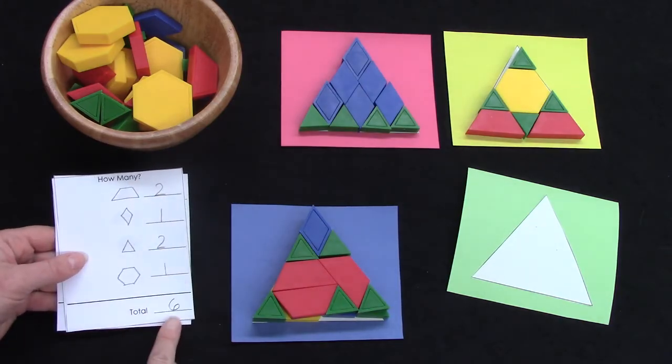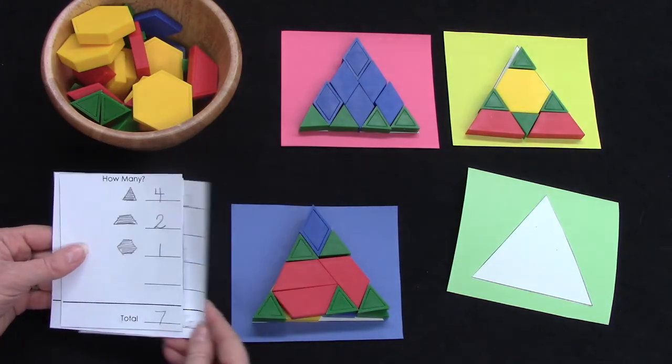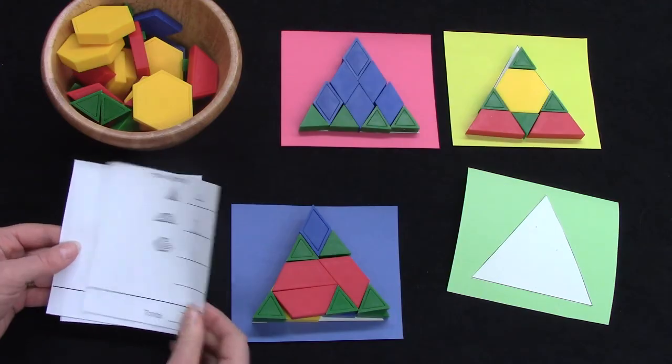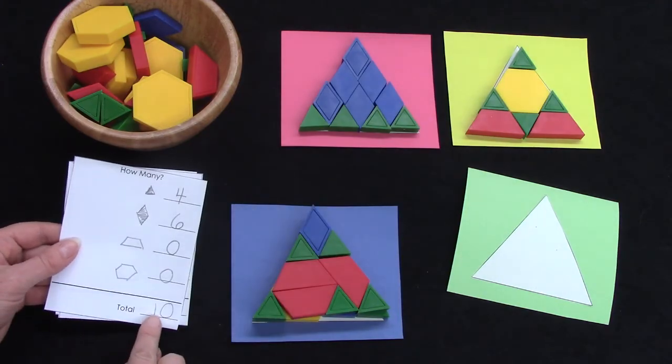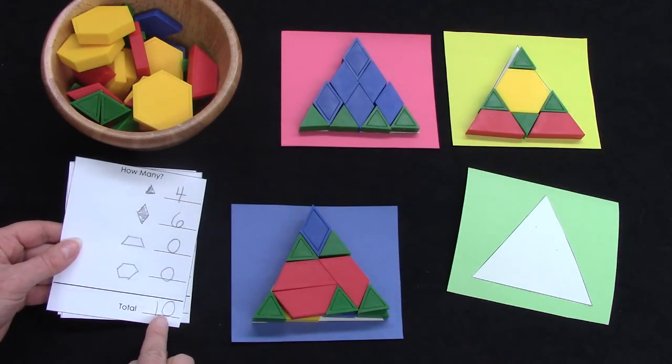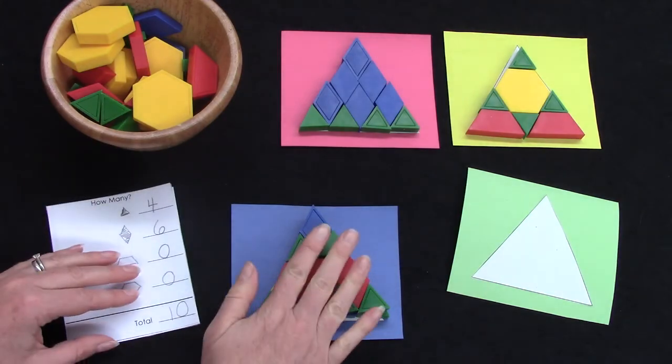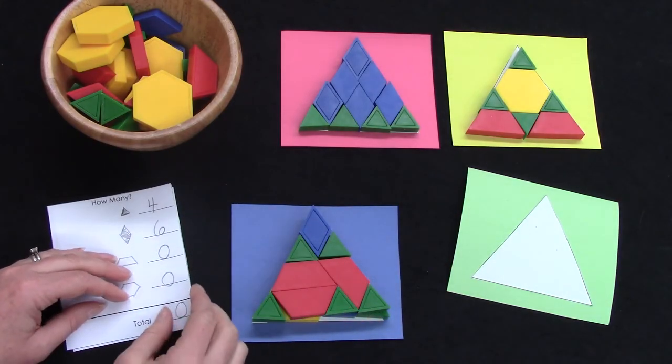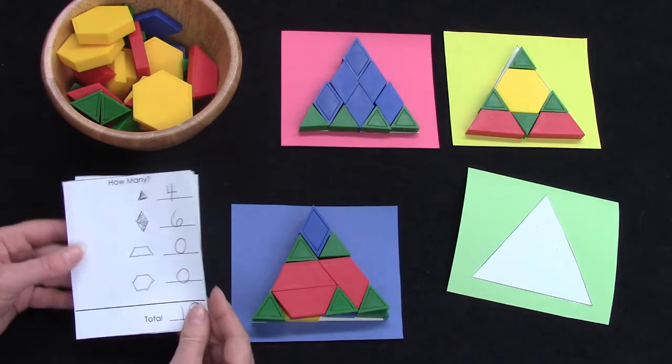When we did it once, our total was six. Another time our total was seven. Another time our total was ten. What would be the fewest number of shapes that would cover your design?